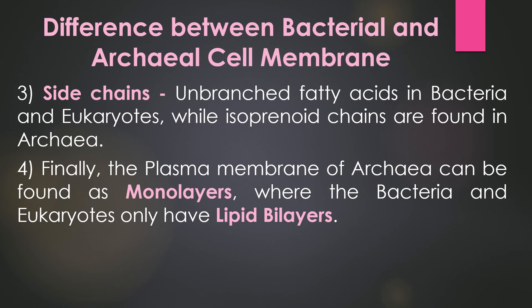The third difference is associated with the side chains. Unbranched fatty acid side chains are present in both bacteria and eukaryotes, while isoprenoid chains are found in Archaea. These isoprenoid chains can have branching side chains. Finally, the plasma membrane of Archaea can be found as monolayers, where the isoprene chains of one phospholipid connect with the isoprene chains of a phospholipid on the opposite side of the membrane. Bacteria and eukaryotes only have a lipid bilayer, where the two sides of the membrane remain separated.